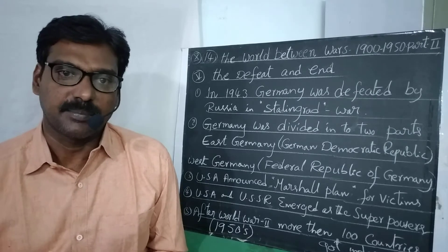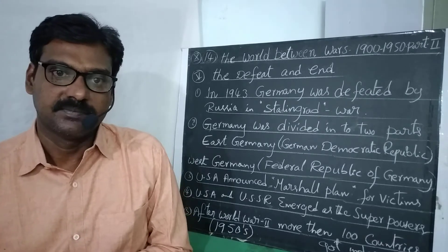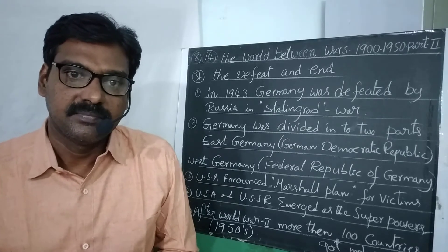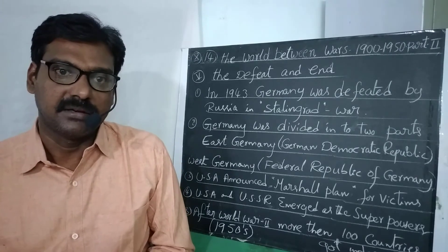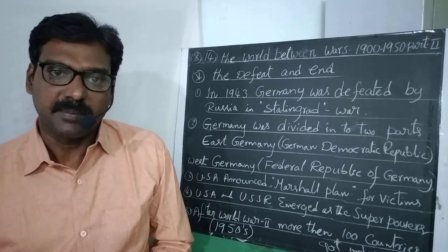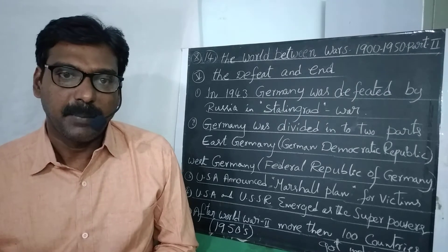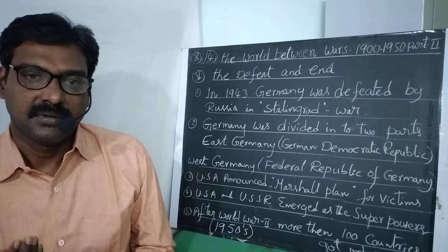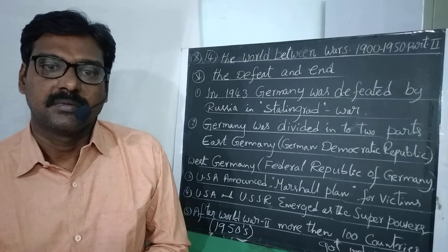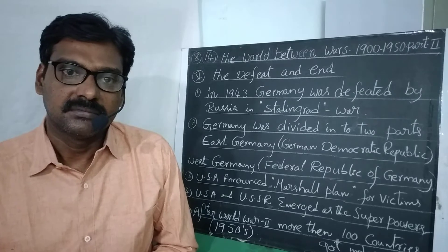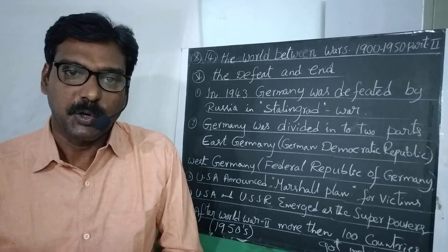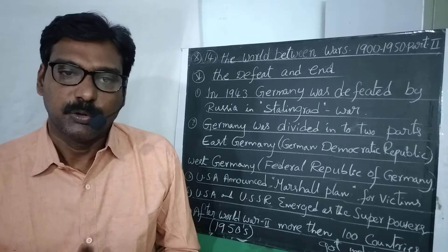After Germany was defeated, Germany was divided into two parts — East Germany and West Germany. In East Germany, the German Democratic Republic type of government was formed, and East Germany was controlled by Russia. In West Germany, the Federal Republic of Germany was established, and West Germany was controlled by the USA.